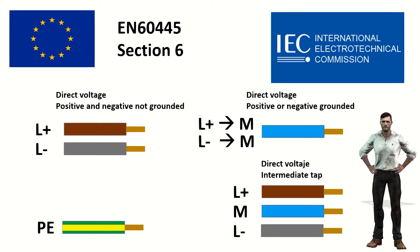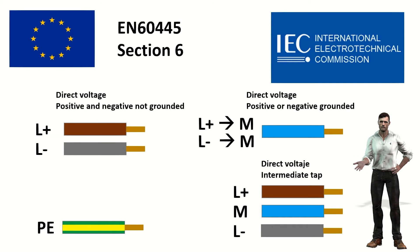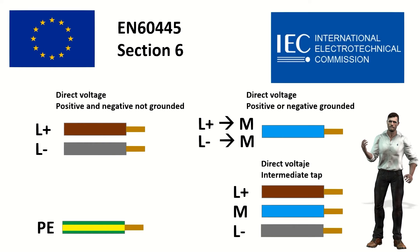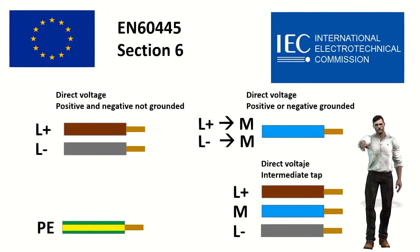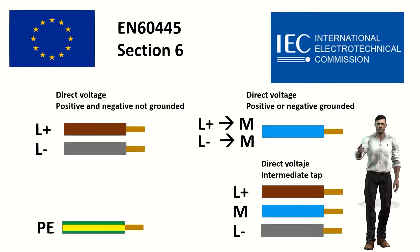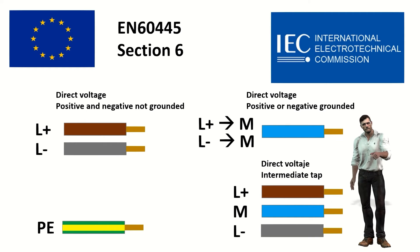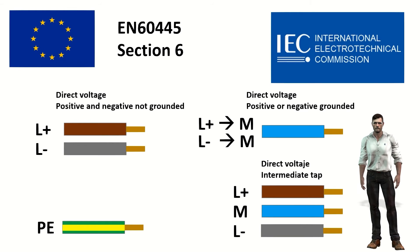For a DC installation with positive and negative not grounded: positive (L+) is brown, and negative (L-) is gray. In case the positive or negative is grounded, the blue color should be used and it would be labeled with the letter M. And if it is a system with an intermediate tap, the blue color is used for the cable of this intermediate outlet, labeled with the letter M. As in AC, the green color with the yellow line is used for the earth or protective conductor.